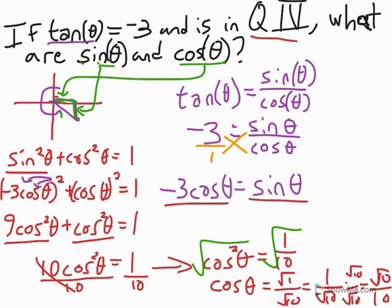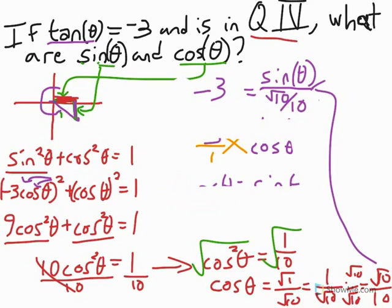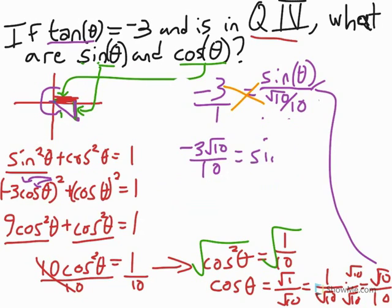That's our cosine, right here. And if we want to find our sine, all we have to do is plug this back in to our first equation. Well, instead of cosine of theta, now we can write square root of 10 over 10. And instead of tangent of theta, we can write negative 3. Now, let's try to solve this. This is a simple cross-multiplication. Negative 3 times the square root of 10 over 10 is negative 3 square root of 10 over 10 equals sine of theta.